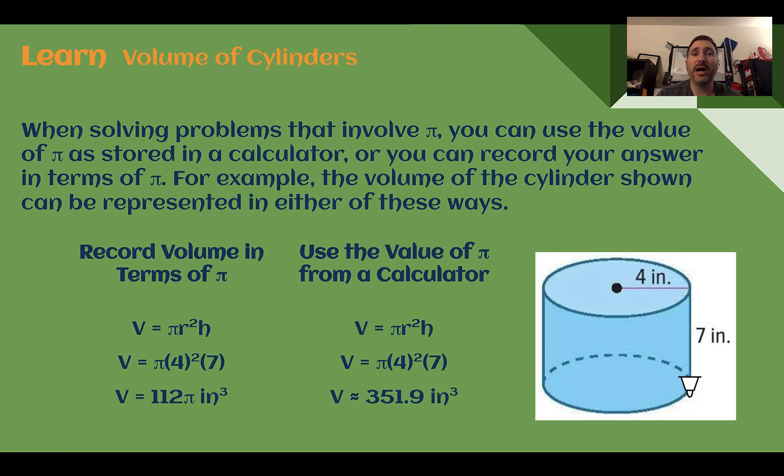When we're solving problems that involve π, you can either use the value of π as stored in the calculator, or you can record your answer in terms of π. So for example, the volume for the cylinder shown can be represented in either way. We could record it in terms of π. So if we look at our final answer, we have 112π inches cubed. The π is still in the answer. When they ask you to find the exact volume, this is what you need to do. You need to leave it in terms of π. That gives you the exact answer.